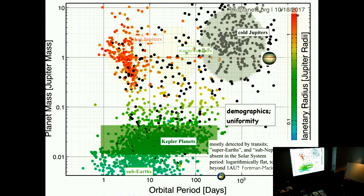Obviously, we don't have such planets in our own solar system. You could say, isn't the Earth at the edge of this distribution? It turns out Earth is distinctively different — all the Kepler planets are distinctively different from terrestrial objects. Today I'll focus on two things: one is called demographics of these planets, and the other is called uniformity. Typically when I give this talk, uniformity is where I spend almost all the time, but today I'm going to change tactics and spend most of the time on demographics.